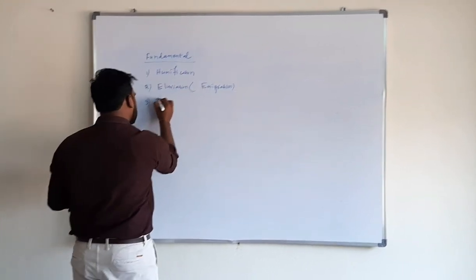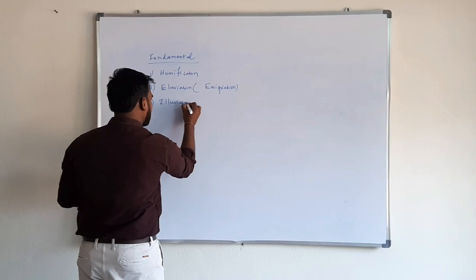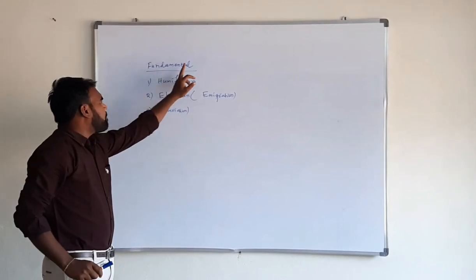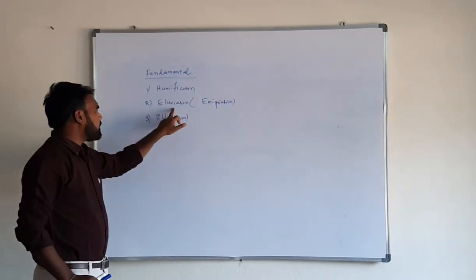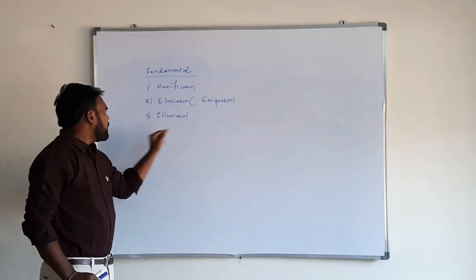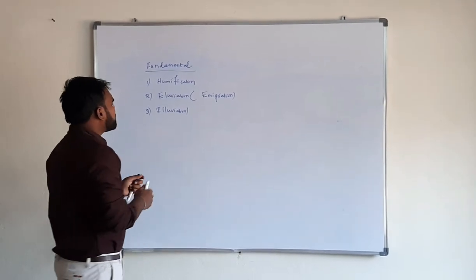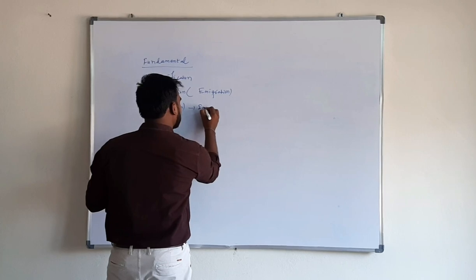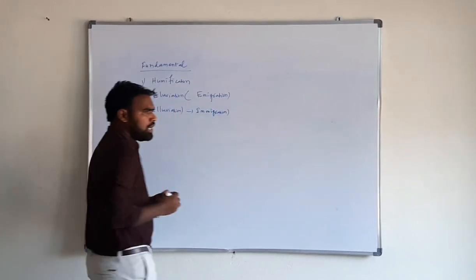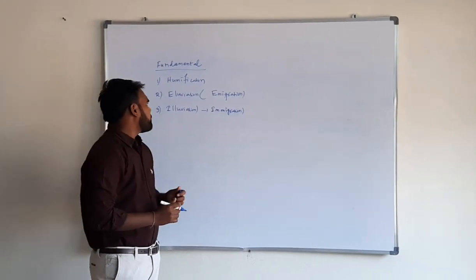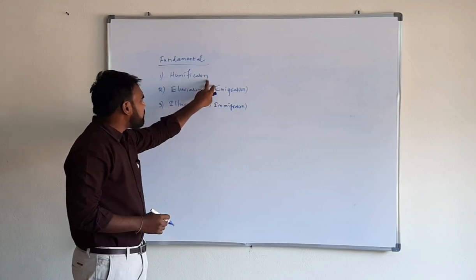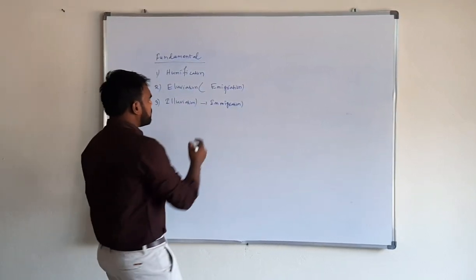Third one is illuviation, also known as immigration. Coming to the first one, humification: humification is nothing but conversion of raw organic matter into humus.